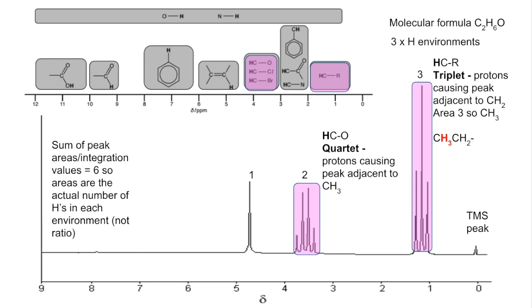It's a quartet, so the protons causing the peak must have an adjacent CH3 group. The area is 2, so it's a CH2. So the blue protons there would be responsible for that quartet. You can see in the environment, it's H to C, a single bond O, and it's also adjacent to a CH3 group.